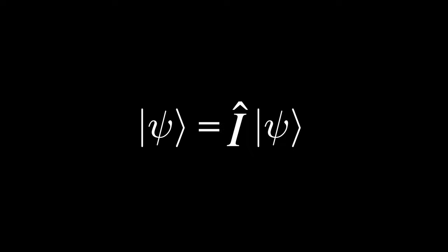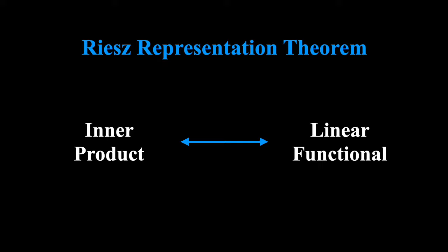The pivotal first step towards grasping Bra-Ket Notation is to understand the Riesz Representation Theorem. It is a mathematical theorem that relates inner products on Hilbert spaces to something called linear functionals.